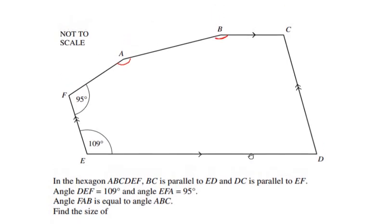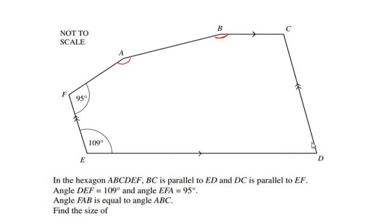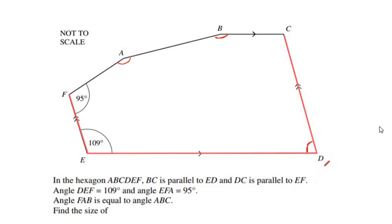We want to find angle EDC, which is over here. To find angle EDC, we are going to make use of the given parallel lines EF and DC. Line ED acts as a transversal cutting the parallel lines EF and DC at points E and D. So angle E and angle D are acting as co-interior angles of the parallel lines EF and DC.